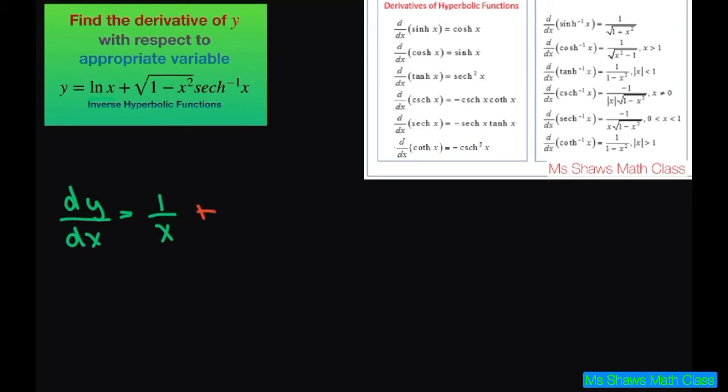Now let's do the second part. For the second part, let's go ahead and write this as 1 minus x squared to the 1 half power. So just copy that down.